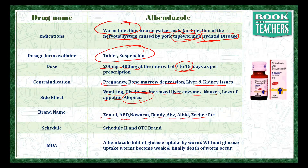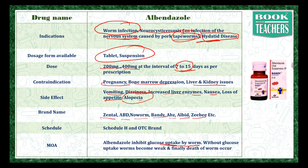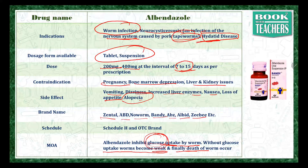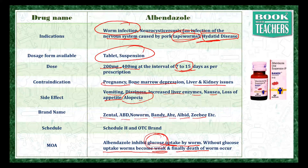Now we will see how albendazole actually works on the parasite. Albendazole inhibits the glucose uptake by the worm. Glucose is used as the main energy source for the worm. Without glucose uptake, the worms become very weak and finally death of the worm occurs due to lack of glucose. So there won't be any source of energy, and the parasite won't be able to survive for longer. This ultimately heals the organ from worm infection. Thank you so much.